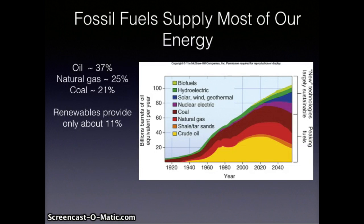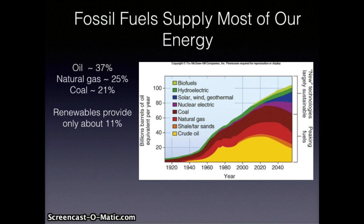Like most industrialized nations, the United States gets a vast majority of its energy from fossil fuels. According to the U.S. Energy Information Agency, oil currently provides 37 percent of this supply, followed by natural gas at 25 percent and coal at 21 percent. Renewables — hydro, wind, solar, biomass — provide 11 percent, and nuclear power supplies 9 percent. China now consumes as much primary energy as all of Europe, and because so much of China's energy comes from coal, it has surpassed the United States in total carbon dioxide production.